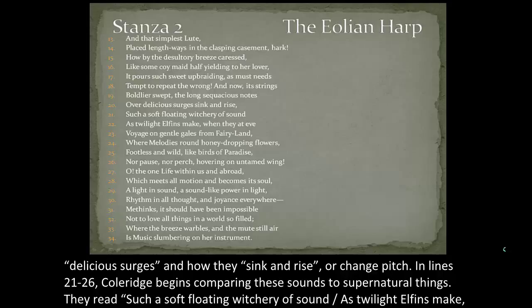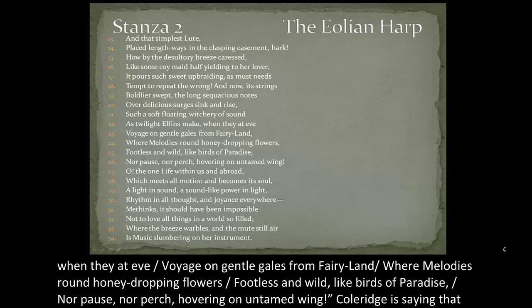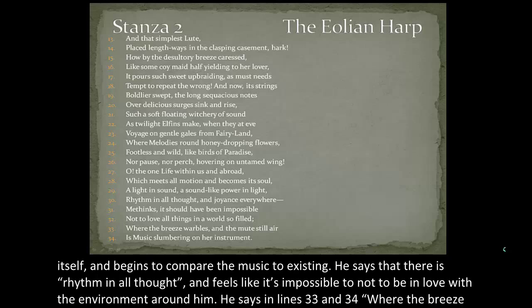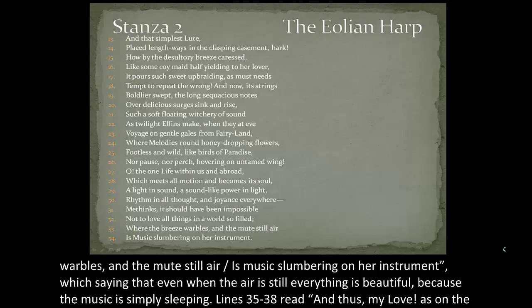In lines 21 through 26, Coleridge begins comparing these sounds to supernatural things, saying that the sounds remind him of fairies in the nighttime. For the rest of this stanza, Coleridge continues speaking of not only his infatuation with the noise but with life itself, comparing the music to existing. He says there is rhythm in all thought and in lines 33 and 34 notes that 'where the breeze warbles and the mute still air is music slumbering on her instrument' — meaning that even when the air is still, everything is beautiful because the music is simply sleeping.